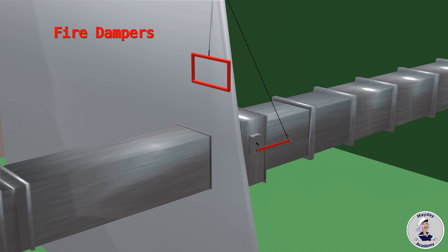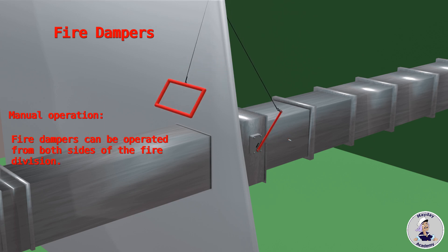Moreover, dampers can also be operated manually from both sides of the fire division bulkhead. Fire dampers are indicated in the Fire and Safety Plan by this icon.